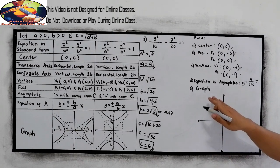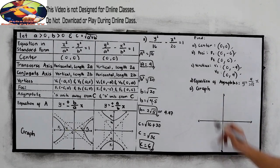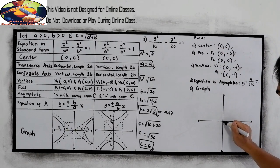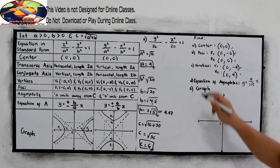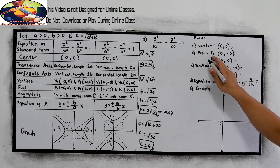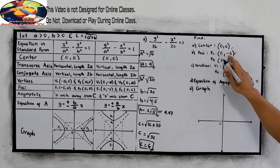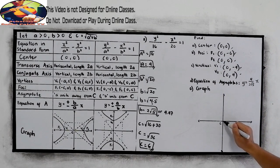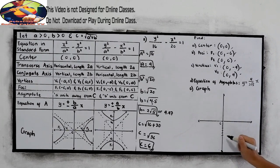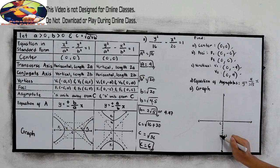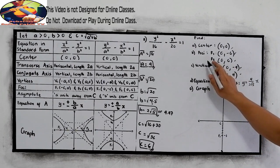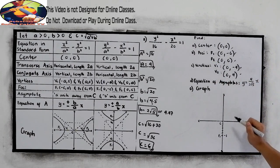For our graph, let us first locate the center. Then the foci: 0, negative 6 — counting 1, 2, 3, 4, 5, 6 — this will be our f sub 1. Then the second focus is 0, positive 6.